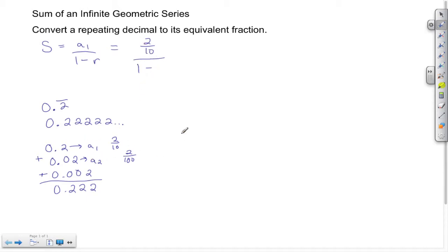Well, a₁ we said is 2/10 over 1 minus r. We need to figure out what r is. Again, r is the common ratio, and because we have the first two terms, r can be found by taking the second term and dividing it by the first term.